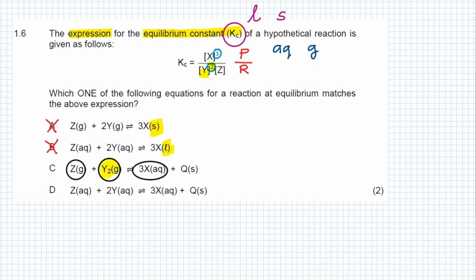However, can you see that the Y's concentration is placed to the power of two? If we look at this Y, it has a subscript 2 and not 2 as the number in front of it representing the ratio in which the reactants will react. So C is incorrect.